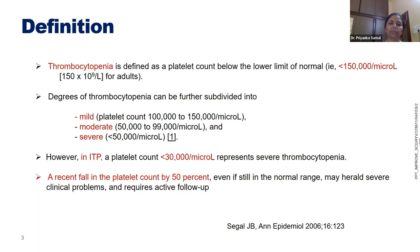In ITP, patients usually have less than 30,000 platelet counts where we need to intervene in adults. It is still lower in pediatric patients — less than 10,000, or only if the patient is bleeding. However, absolute values are not always of primary importance. A recent fall in platelet count by more than 50% should raise a clinician's suspicion, as the count may continue to fall in the following day or two.